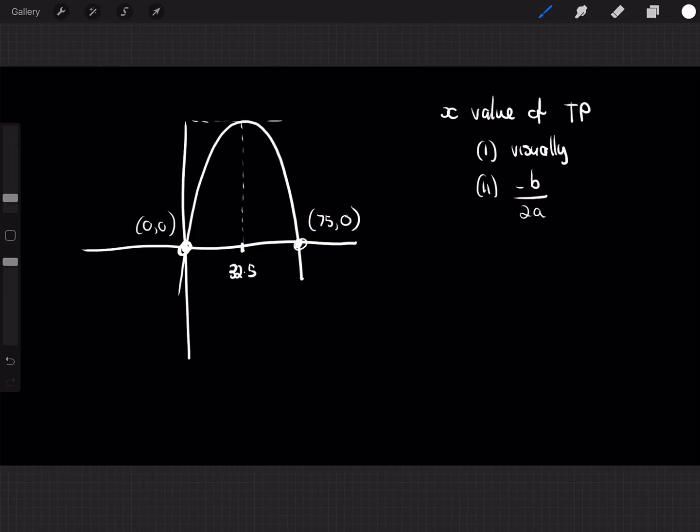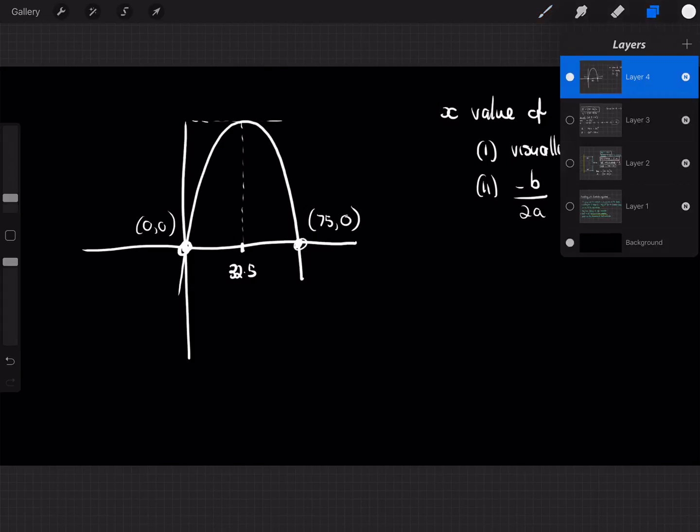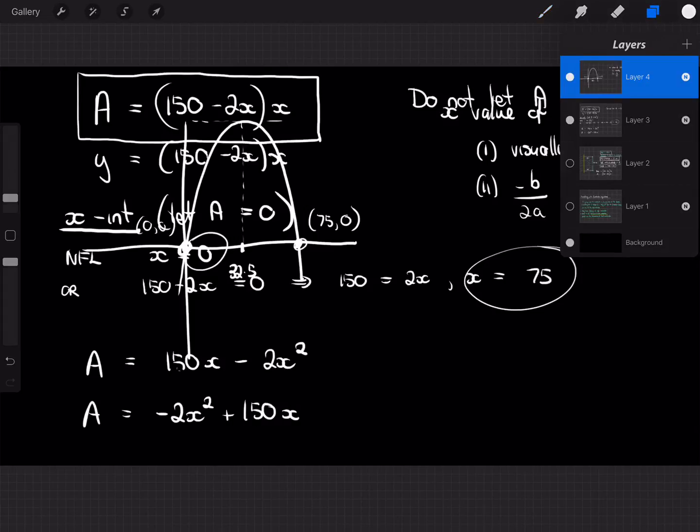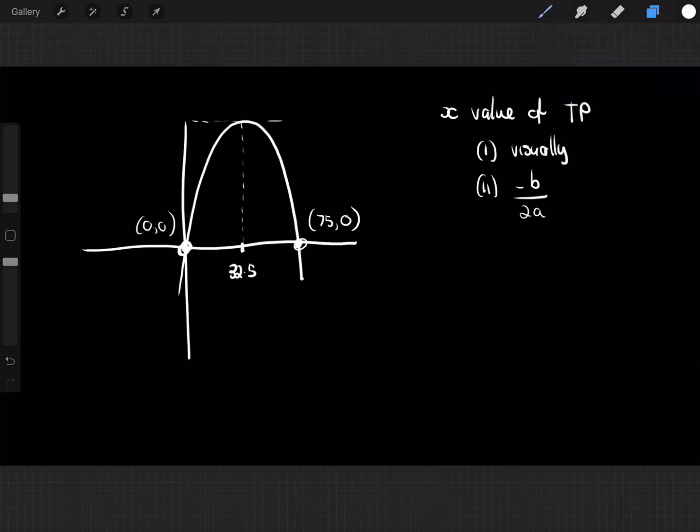The second way is to use the formula negative b over 2a. And if we use that formula, remember, our equation was expanded equation. It was negative 2x squared plus 150x. So, in this case, we can see that a equals negative 2 and b equals 150. So, negative b over 2a is going to be negative 150 over 2 times a. Well, 2 times a is 2 times negative 2, which is negative 4. So, it's going to be 150 over 4, which is 32.5.